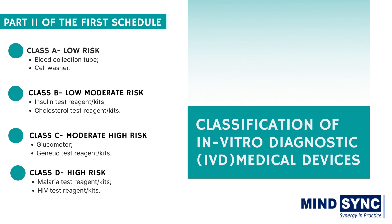We will then go on to the in vitro diagnostic medical devices classification. IVD are categorized separately from other medical devices. The central licensing authority shall classify IVD devices on the basis of intended use and parameters specified in Part Two of the First Schedule of Medical Devices Rules, in the following classes. Class A denotes low risk — for example, blood collection tube, cell washer. Class B is low to moderate risk — for example, insulin test kits, cholesterol test kits. Class C denotes moderate to high risk, such as glucometer and genetic test kits. And Class D is high risk — for example, malaria test kits and HIV test kits.